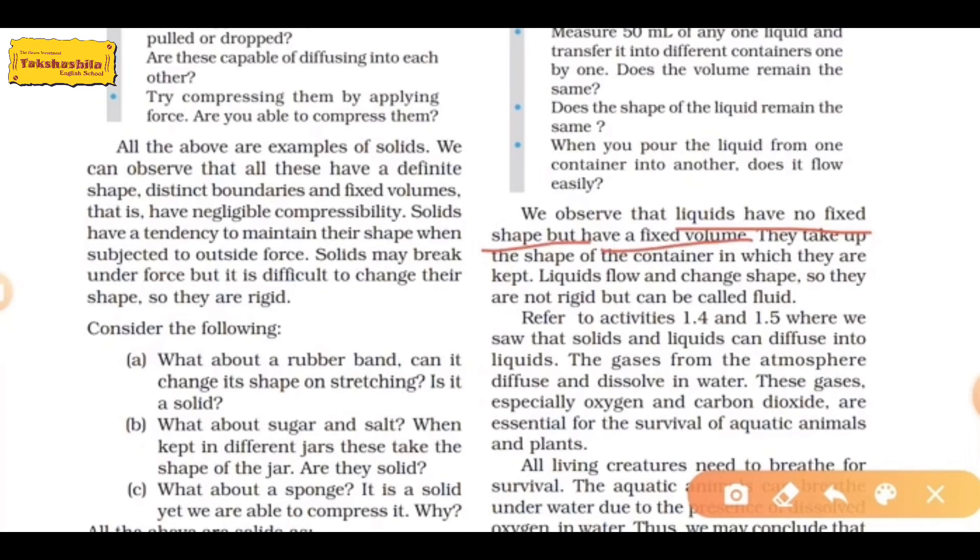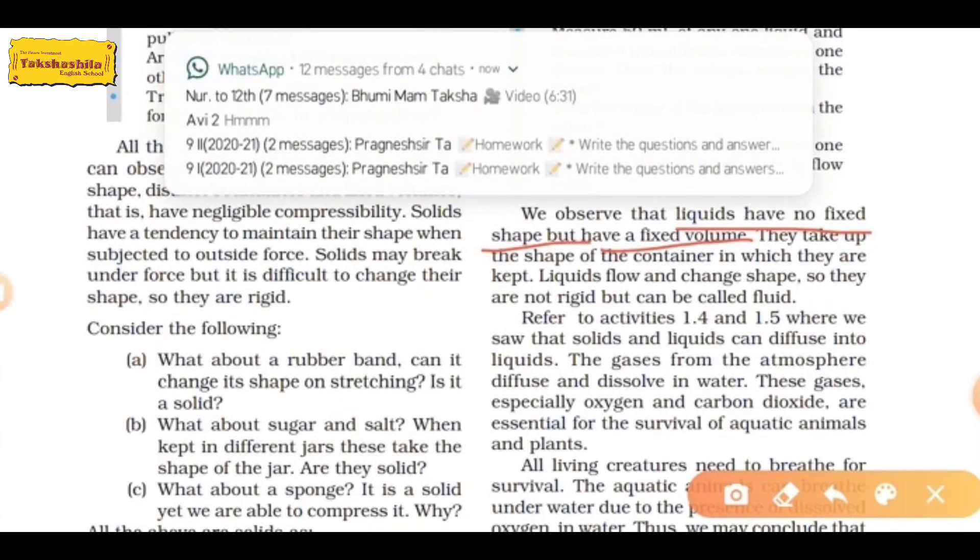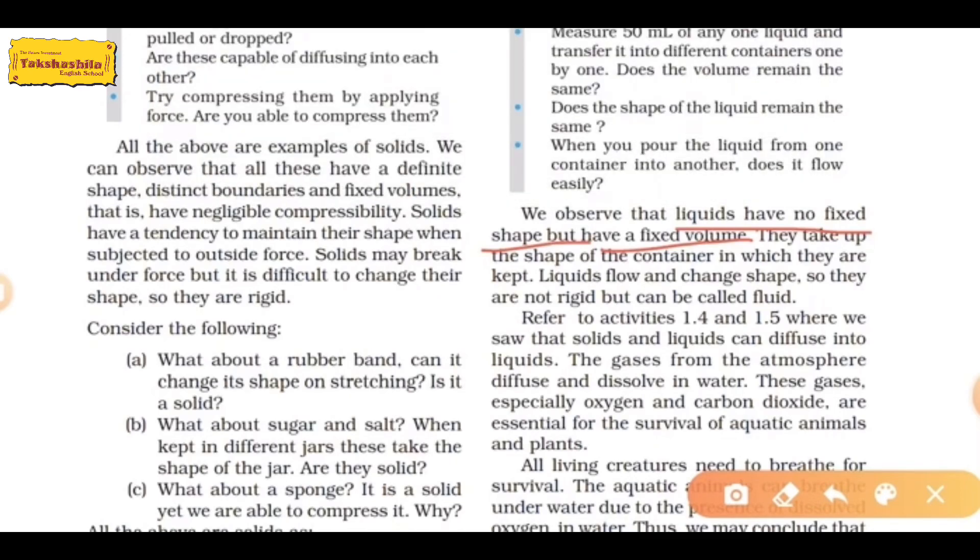What will you observe? Liquids have no fixed shape but have fixed volume. As the container shape changes, the liquid takes the shape of that container. If you take it in a bowl, it will be the shape of the bowl. If you take it in a glass, it will be the shape of the glass. If you take it in a conical flask, it will be the shape of the flask. But the volume is fixed - that is 50 ml.